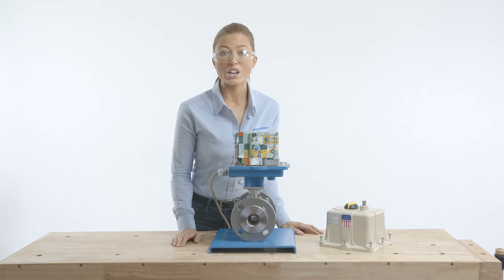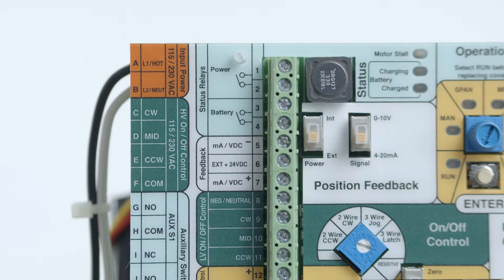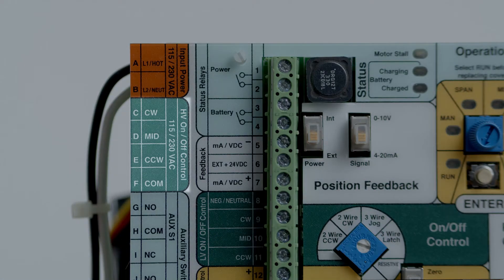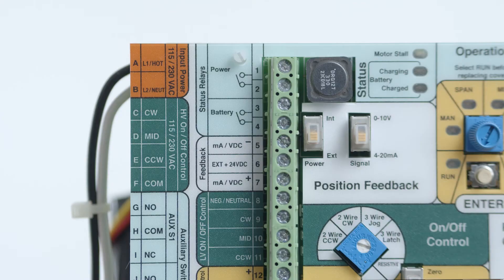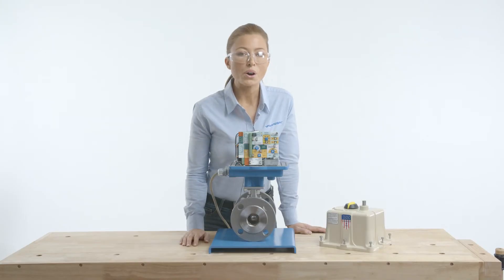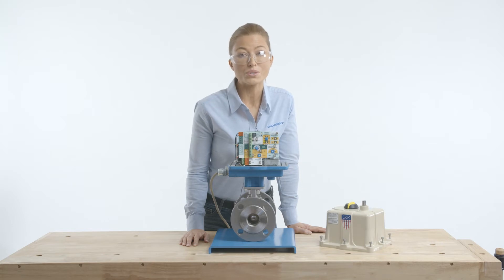The board accepts high voltage on-off control wiring such as 115 or 230 volts AC at terminal C through F on the universal control board. Note, if using one of the two-wire modes, only one AC line one or hot will be used.